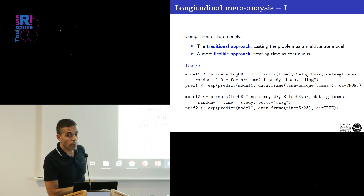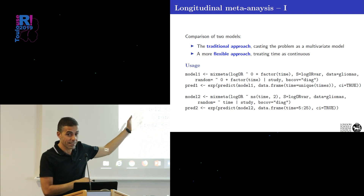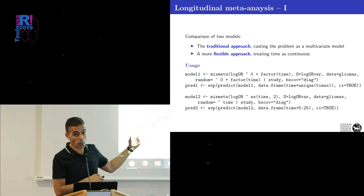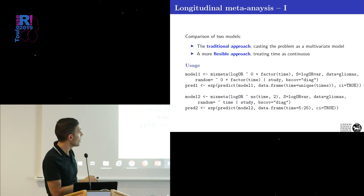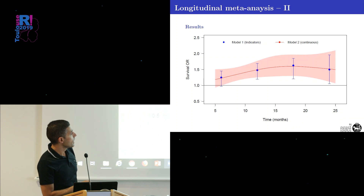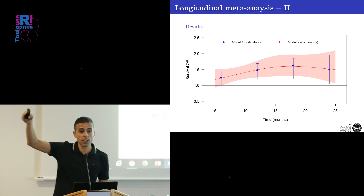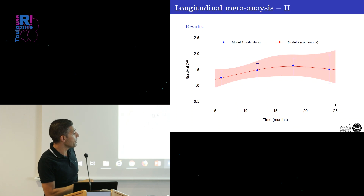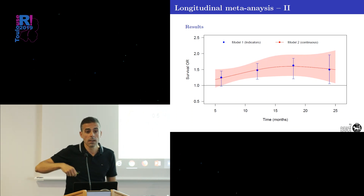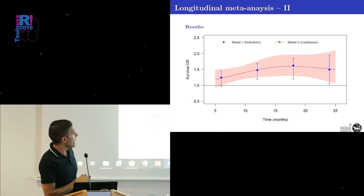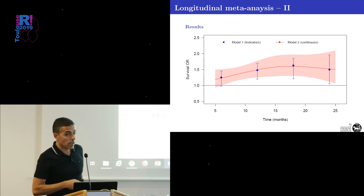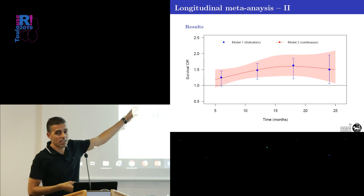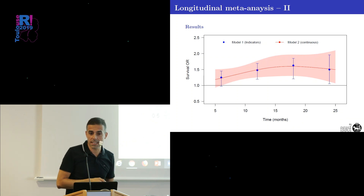I decided not to model the random part with a spline because the dataset is quite small and probably wouldn't support such complex models, but this is just an example. The results from published studies show effects in terms of odds ratios at different times after the intervention — treatment for glioma in this case. Using model 2 with continuous time, you can obtain an estimate at any given time point. There's not much gain in this very simple study, but there could be in others.